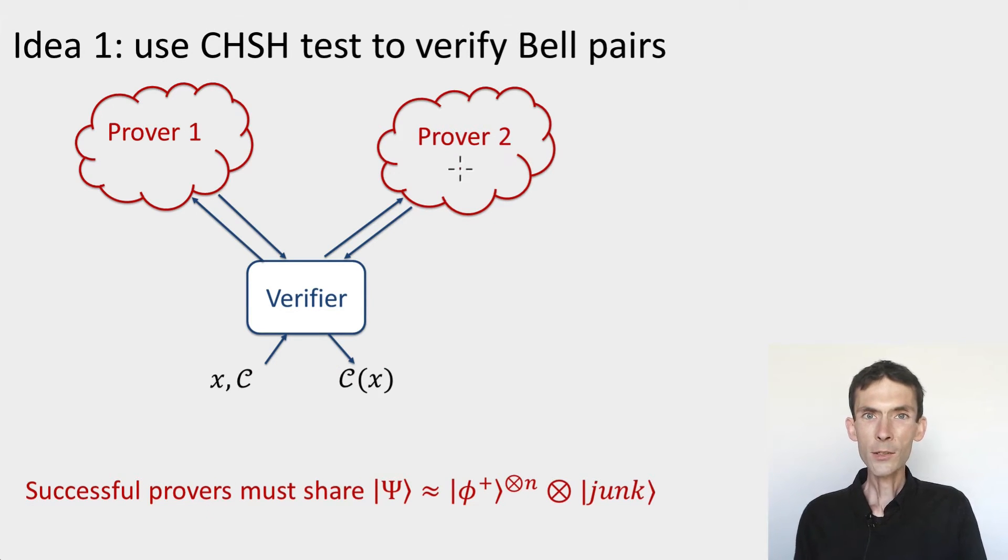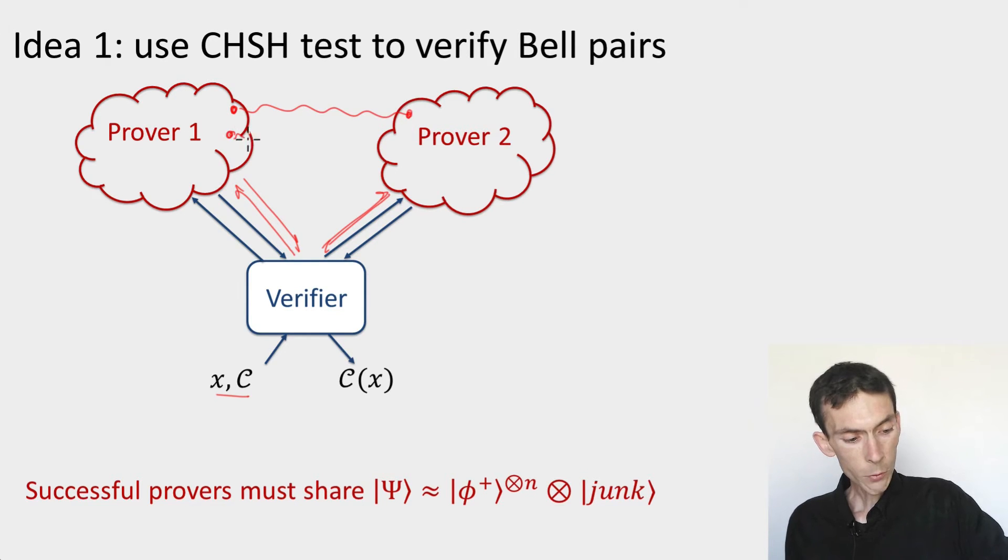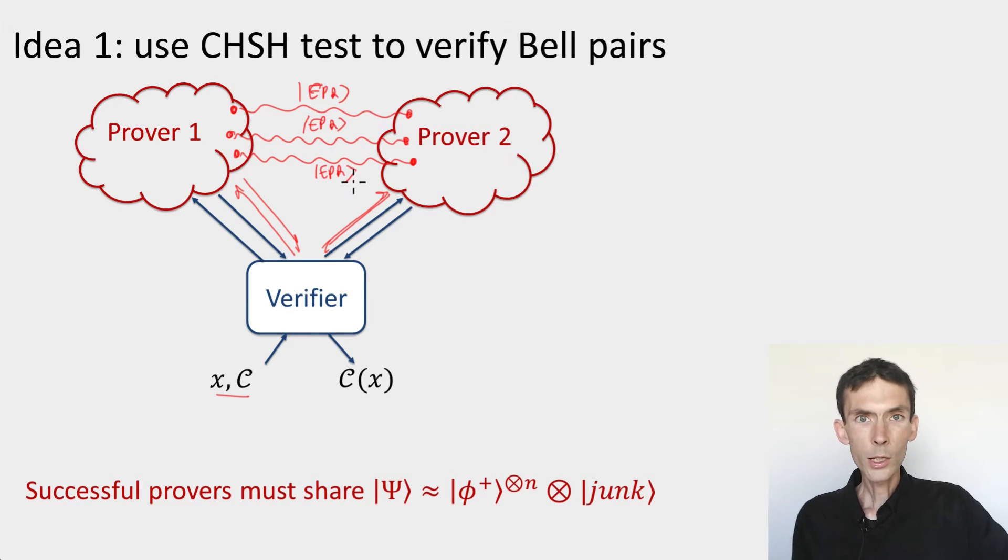So the first idea is an idea that we've seen already. We're going to use the CHSH test, the CHSH game, in order to force these provers to share a large number of EPR pairs. So this we know how to do. It's a part of the protocol that's completely independent of the verifier's input. We just have the verifier play many of these CHSH tests with the provers. So this is going to be a sequential interaction. We send bits, receive bits, and these bits are generated and checked as in the CHSH test. And the outcome of that part of the protocol will be that we have a guarantee that provided we check that the provers satisfy the CHSH condition about 85% of the time when we perform these tests, then whatever they were doing, remember these rigidity results that we saw about the CHSH test, whatever they were doing must have been locally equivalent to measuring EPR pairs using the CHSH measurements.